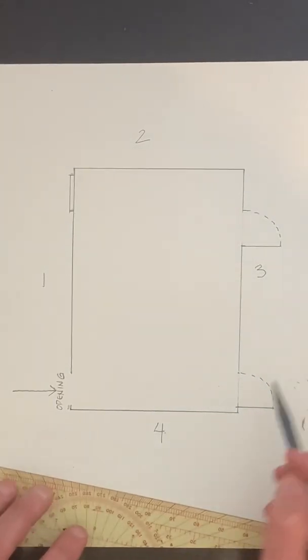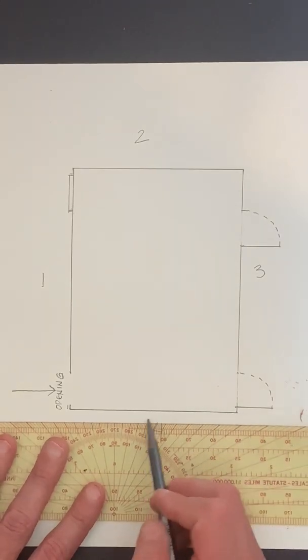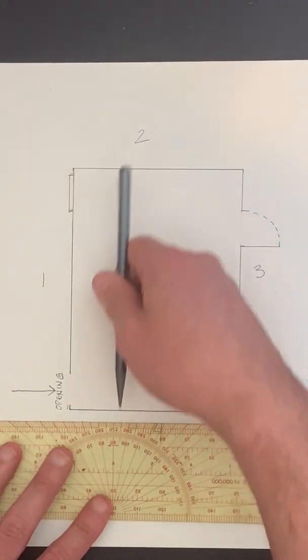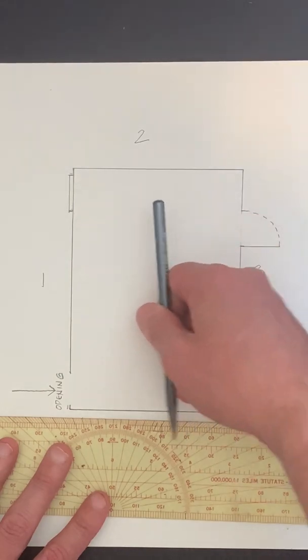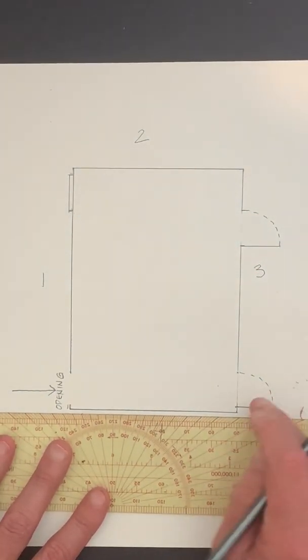Now our final wall is wall number four and we were looking at it this way from the middle of the room and from the left to the right we noticed that it was a solid wall.